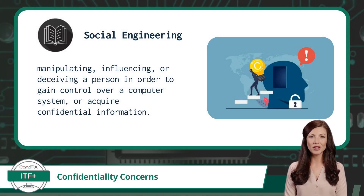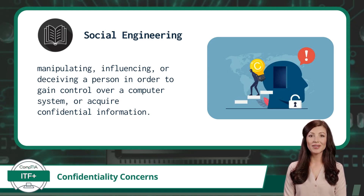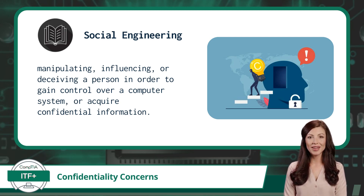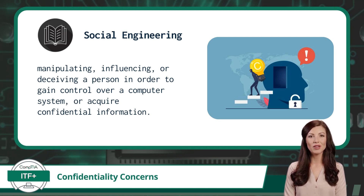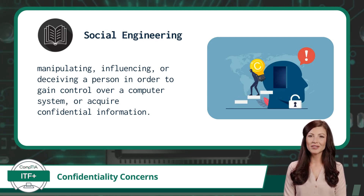To wrap up our list of confidentiality concerns, we will briefly cover social engineering. Social engineering is the practice of manipulating, influencing, or deceiving a person in order to gain control over a computer system or acquire confidential information. It uses psychological manipulation to trick users into making security mistakes or giving away sensitive information. Attackers use this method because people are often the weakest link when it comes to cybersecurity. Social engineering attacks often involve impersonation or identity fraud, and can happen by text, email, a phone call, or even through face-to-face communication. The solution to social engineering attacks, and all cybersecurity attacks for that matter, is education.